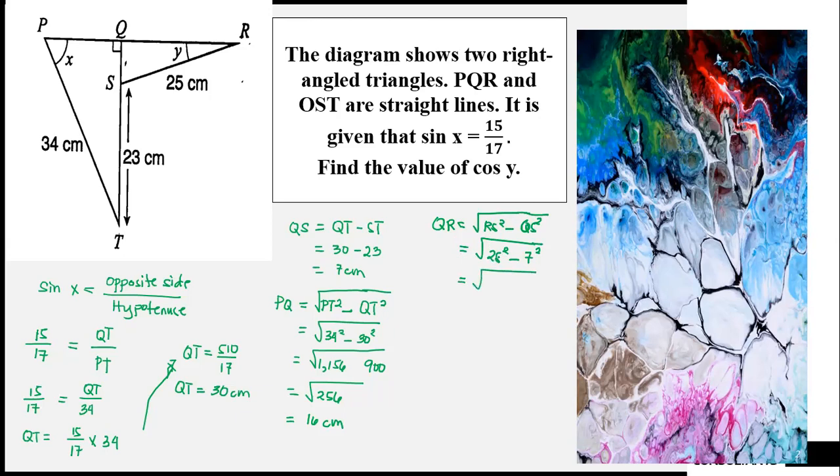25 squared equals 625 minus 7 squared equals 49. 625 minus 49 equals 576. Get the square root of 576 which equals 24. So, QR is 24 centimeters.